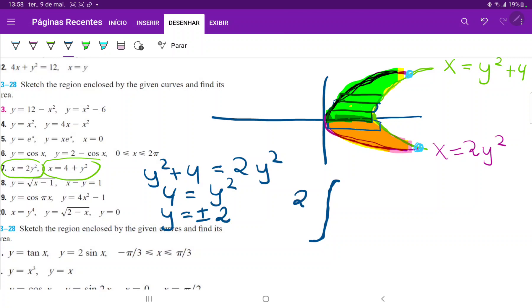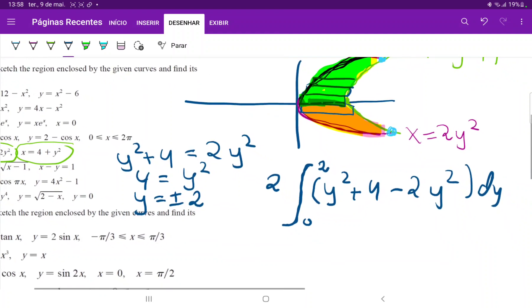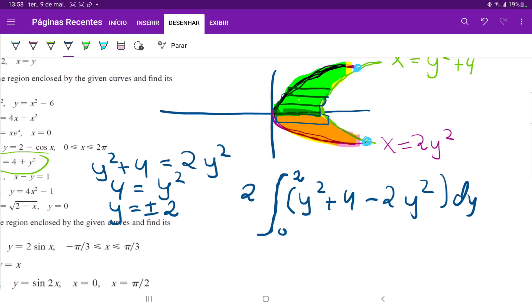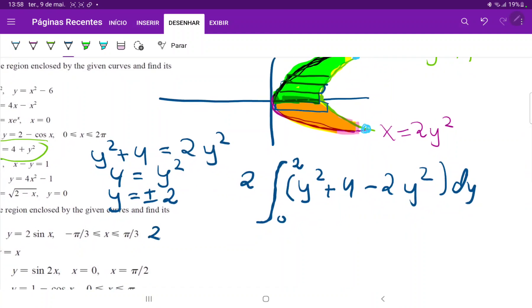So we can say that this is twice the area from zero to two of the upper curve, which is y squared plus four minus two y squared, and all of this times dy. And we can't forget where the dy comes from, which is just the width of our horizontal rectangle. And the reason that we do two times the integral from zero to two, because then it becomes much easier to compute the lower boundary, which is zero. So let's just clean this up a little bit. This is equal to two times the integral from zero to two of y squared minus two y squared is minus y squared plus four times dy.